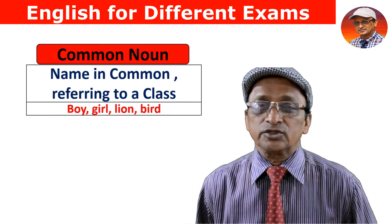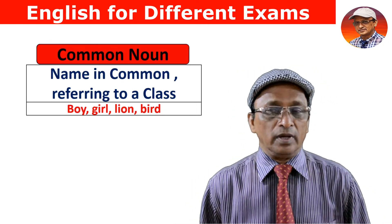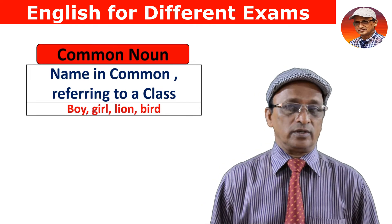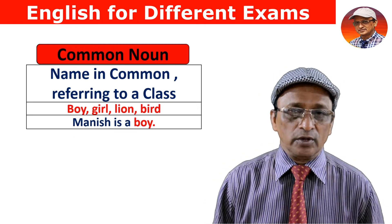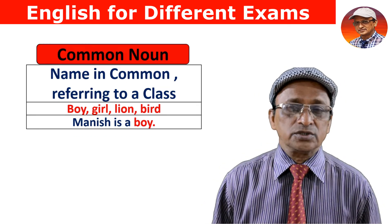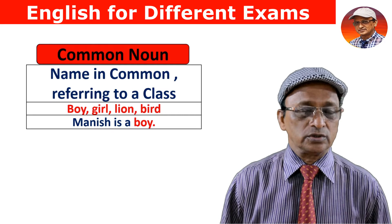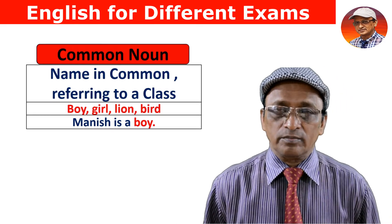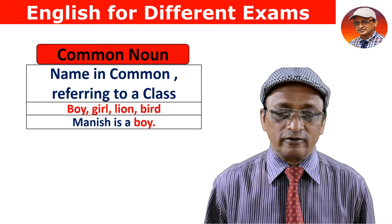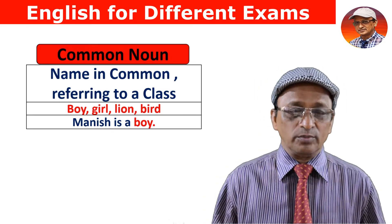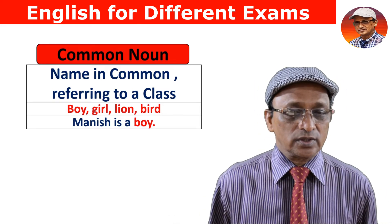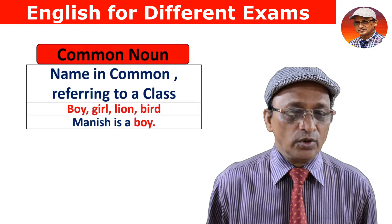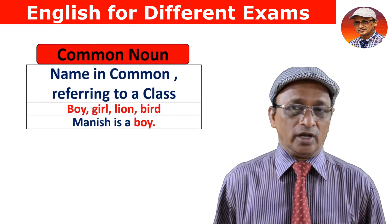Here is another example sentence: 'Manish is a boy.' Manish is a proper noun — the name of a specific person. But 'boy' refers to all the boys, so boy is a common noun.